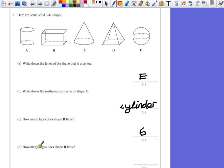Part D. How many edges does shape D have? Well, an edge is the straight line where two faces meet. So on a diagram like this, it's the number of lines. So we've got 1, 2, 3, 4 lines coming down. 1, 2, 3, 4 on the bottom. So that means there are 8 edges on shape D.